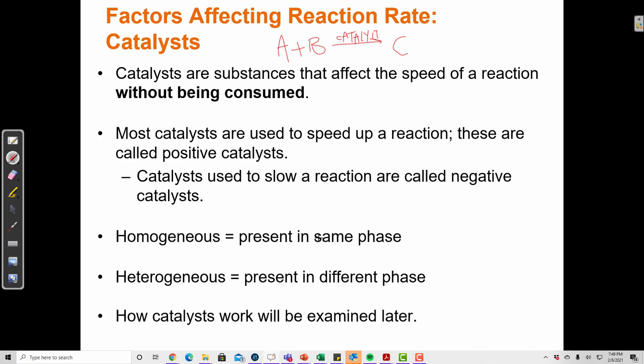Catalysts can be homogenous, which means they're in the same phase. So if I have a reaction that is in solution, it's a dissolved ion maybe, then my catalyst would also be a dissolved ion. I can also have heterogeneous catalysts, and this is where if I have a reaction that's happening in solution and the reactants are ions, the catalyst might be a solid, like the metal. I would throw in solid metal, and the ions might stick to it and make the reaction go faster or slower.